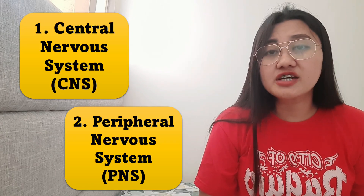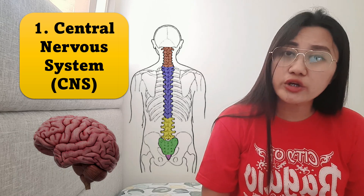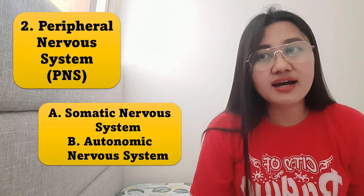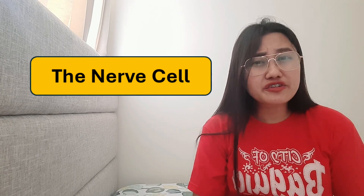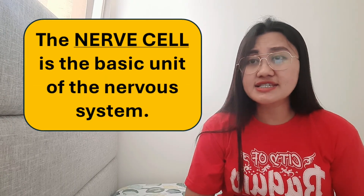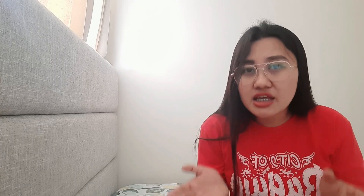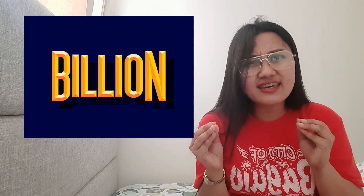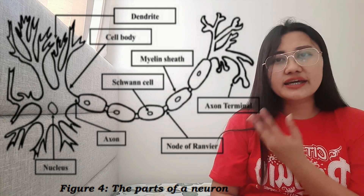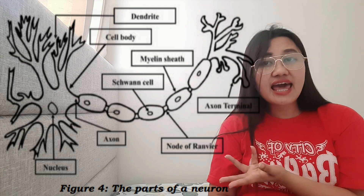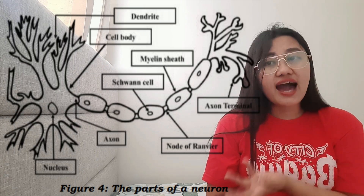To recap, the two divisions of the nervous system are the CNS (brain and spinal cord) and the PNS (somatic and autonomic nervous systems). Now let us discuss the nerve cell. The nerve cell is the basic unit of the nervous system, known as the neuron. There are billions of neurons in the body. Looking at the figure, you can see the parts of the neuron: the dendrite, the cell body, the myelin sheath, the Schwann cell, the axon terminal, the node of Ranvier, the axon, and the nucleus.